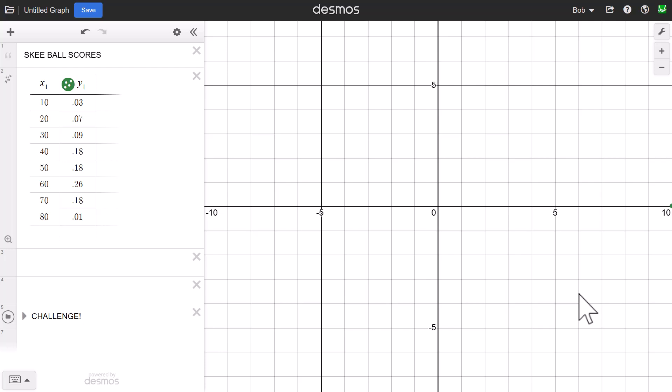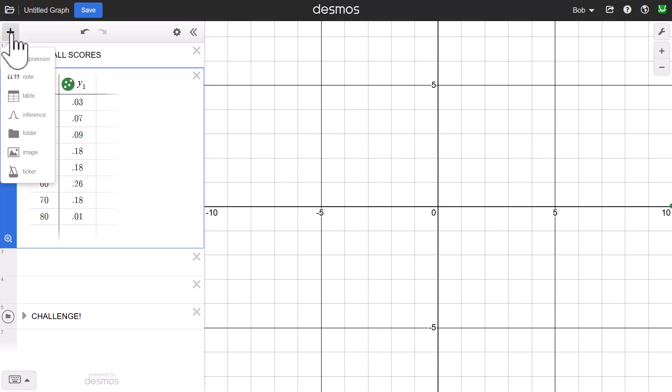On my screen here, I've created a distribution of skee-ball scores. I'm close to the Jersey Shore, so we're always thinking about things we could do on the Jersey Shore boardwalk, and skee-ball is all the rage. We have scores here from 10 to 80. I put those in as X1, and Y1 is my probabilities. I chose to do this using a table, and tables are accessed under the Add Item button on the top here, so I just go down to Table.